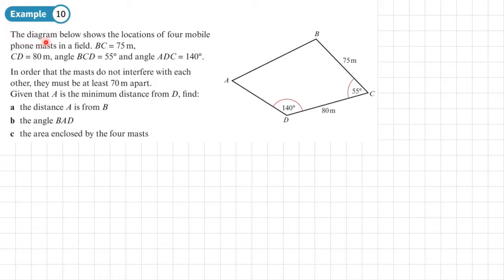Example 10. The diagram below shows the locations of four mobile phone masts in a field. BC is 75 meters, that's there already. CD is 80, so that's there already. Angle BCD is 55, that's there already. And angle ADC is 140, so that's there already.